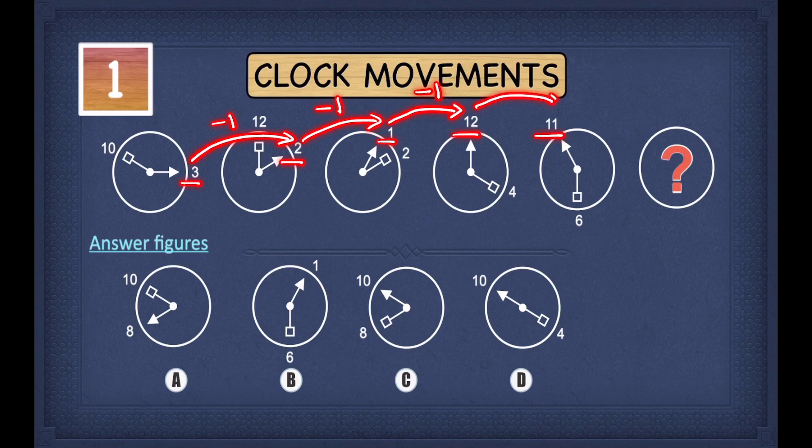And to get from twelve to eleven, you do take away one. Now you can see the pattern is to take away one. So to find where the arrow points in our answer, we have to do minus one. And eleven minus one will give us ten.